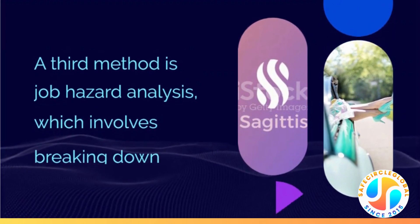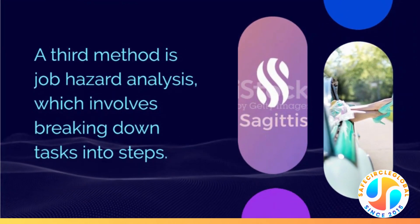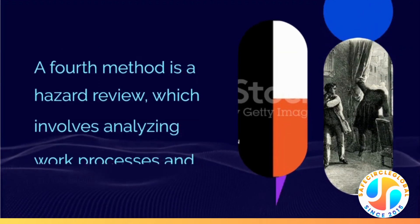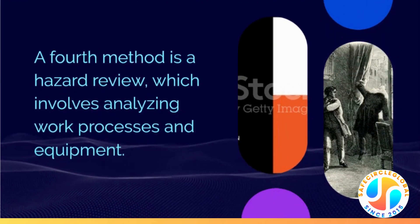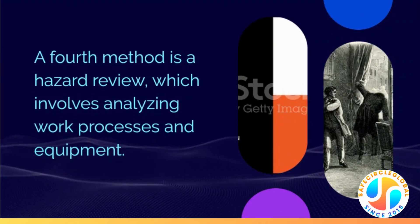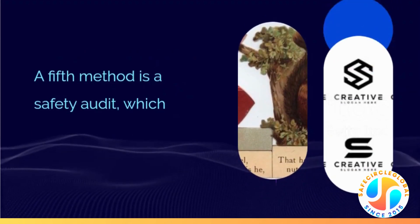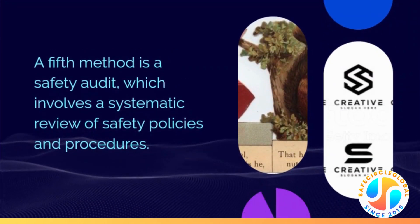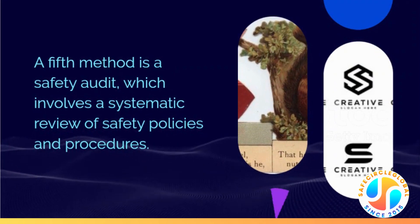A third method is job hazard analysis, which involves breaking down tasks into steps. A fourth method is a hazard review, which involves analyzing work processes and equipment. A fifth method is a safety audit, which involves a systematic review of safety policies and procedures.